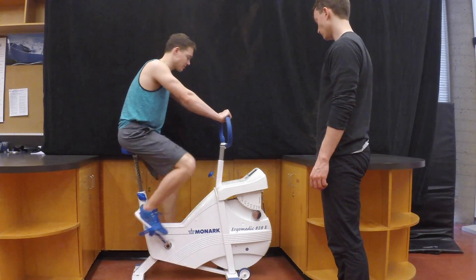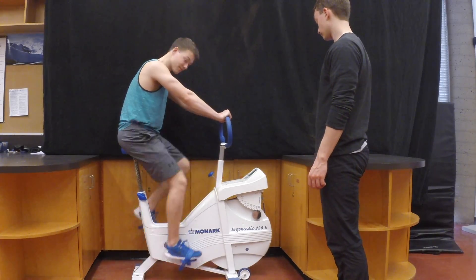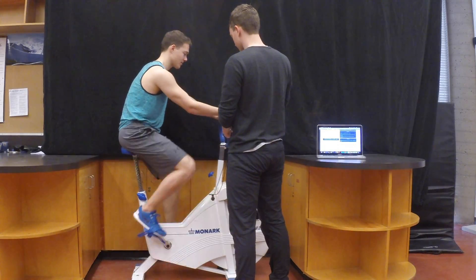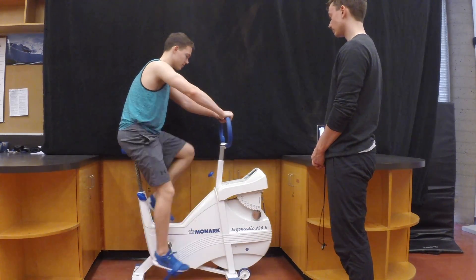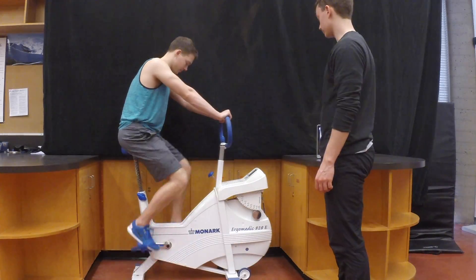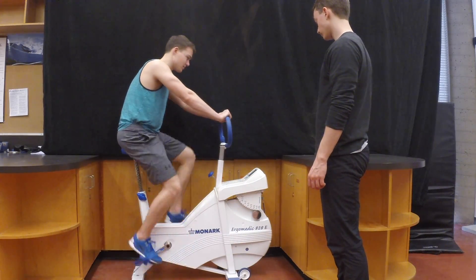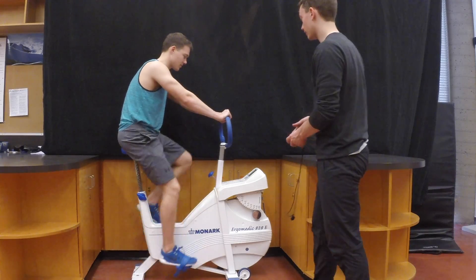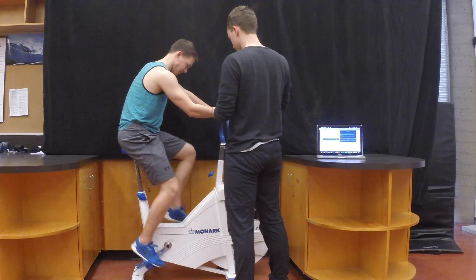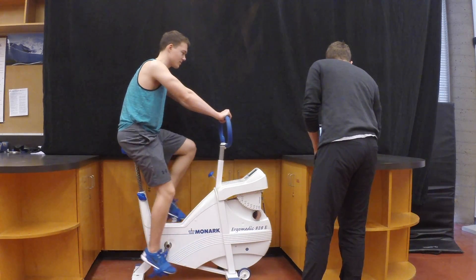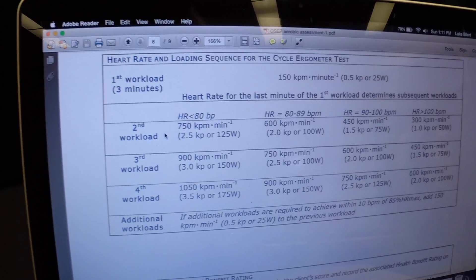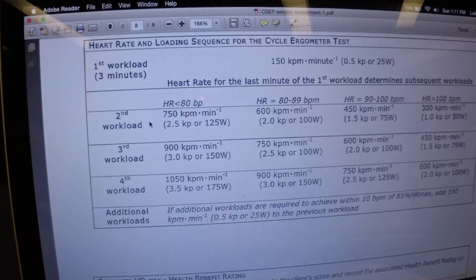Have the client pedal for 3 minutes, and record the heart rate during the last 15 seconds of minute 1, of minute 2, and of minute 3. Now if steady state heart rate was achieved, that means less than 5 beats per minute variance between heart rate 2 and heart rate 3, then use the average to determine the client's second workload.